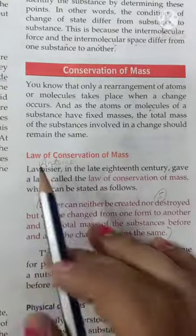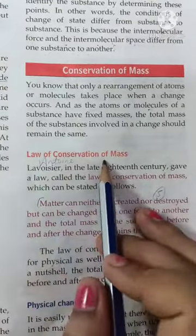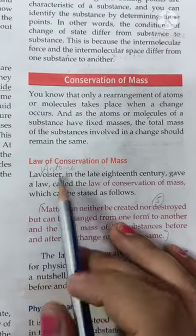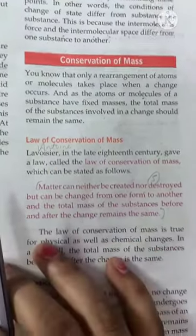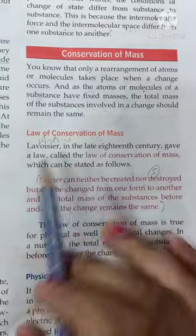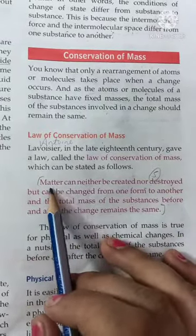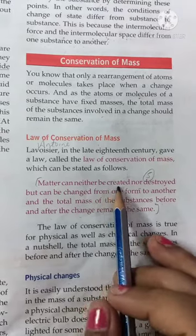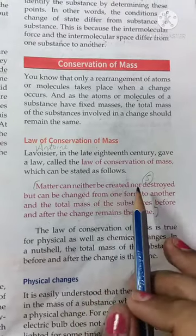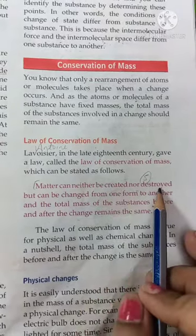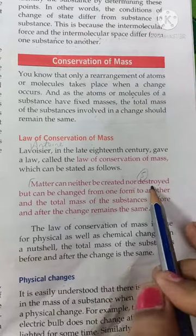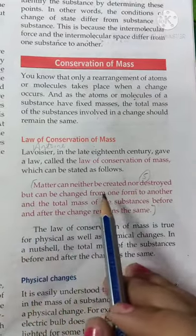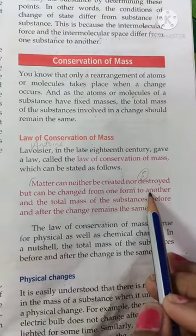Now let's see what is the law of conservation of mass. This law was given by Antoine Lavoisier. According to Lavoisier, matter can neither be created — meaning we can't make it — nor destroyed — meaning it cannot be damaged — but can be changed from one form to another form.